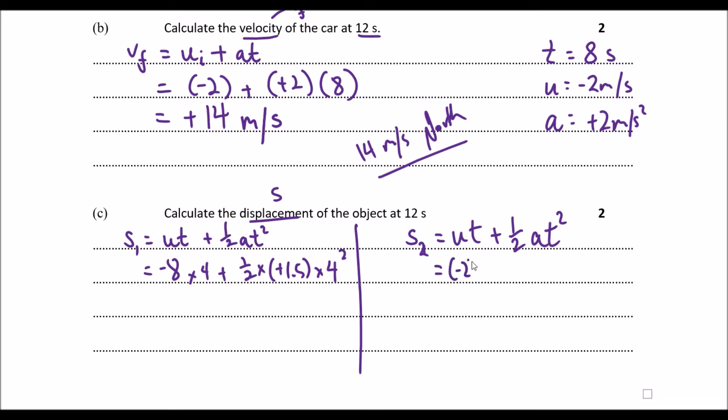our initial velocity was negative two. We travel for eight seconds. We accelerated at two meters per second squared north, which is positive two. And then we have a time of eight seconds squared. So let's plug those into our calculators.